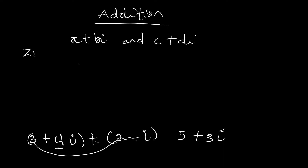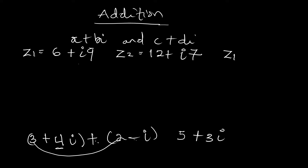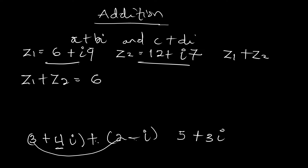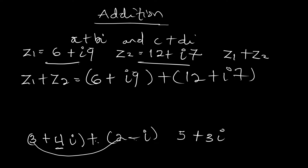Let's solve another example. We have z1 = 6+9i and z2 = 4+7i. We are asked to evaluate z1+z2. So z1+z2 = (6+9i) + (4+7i). Adding the real parts: 6+12 gives 18.